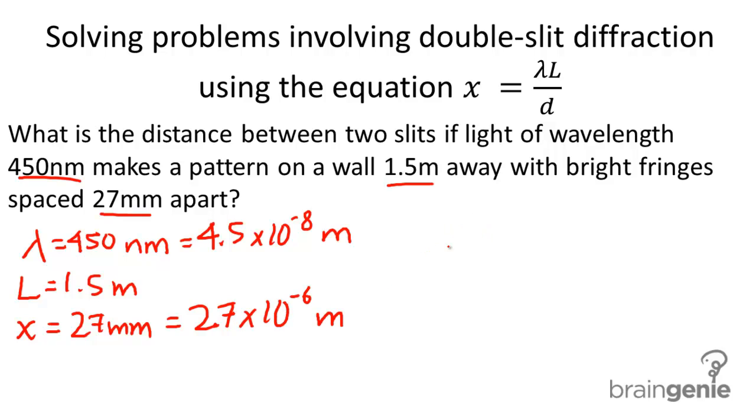When we go ahead and plug this information into our equation, we get 2.7 times 10 to the negative sixth equals our wavelength 4.5 times 10 to the negative eighth. And that is multiplied to 1.5, and that's all over d.